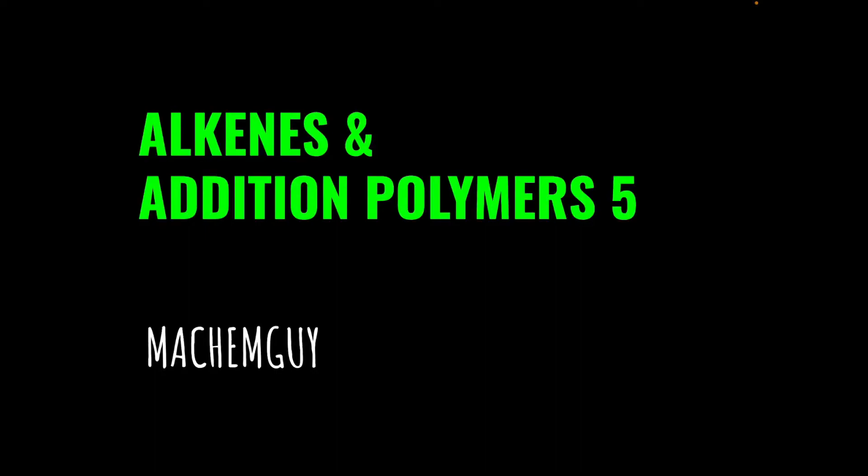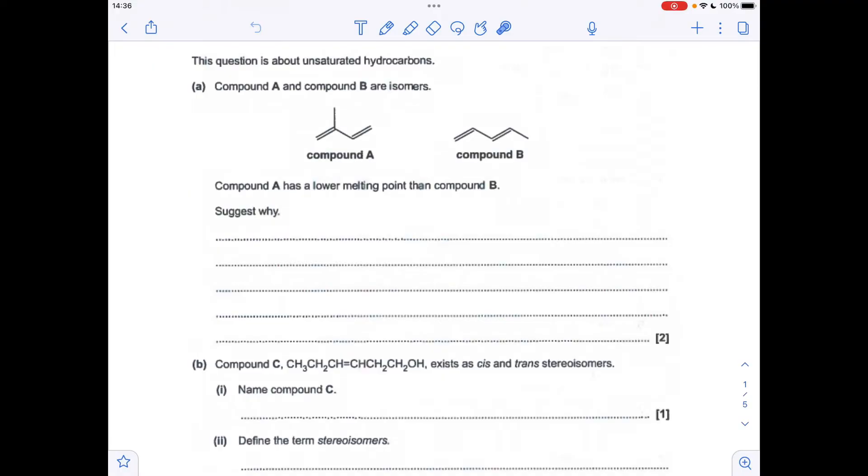Got another set of questions for the alkenes and addition polymers topic, and as always, the link to the questions in the description of the video if you want to try them first. Okay, so make a start. So why has compound A got a lower melting point than compound B? Well, it's all to do with the fact that compound A is branched.